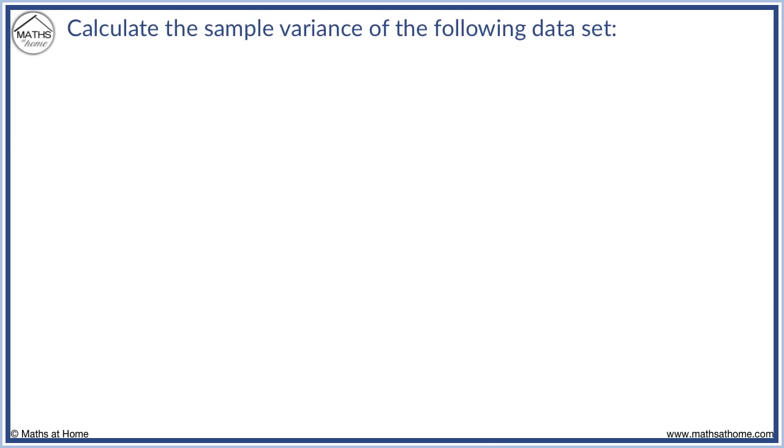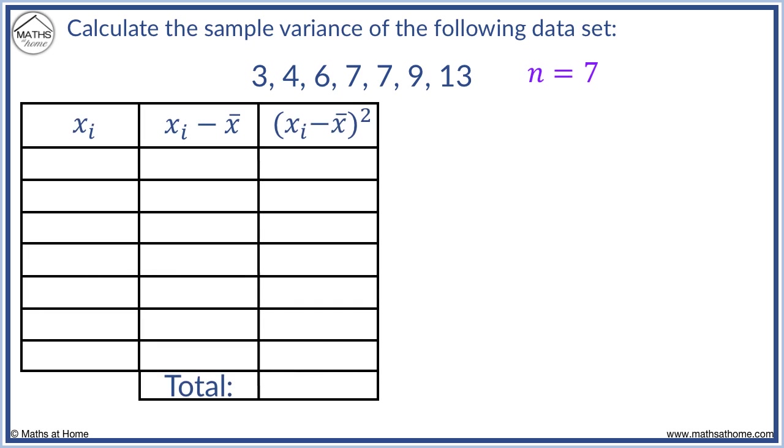For example, calculate the variance of the following numbers. There are 7 numbers, so n equals 7. We make a table like so to organise the calculations. We enter each data value as individual xi values.